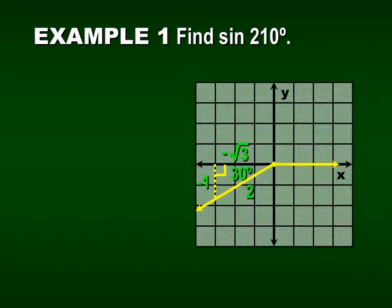The only difference in this problem is that the square root of 3 and the 1 are both negative, because of what quadrant we're in. The x-value is on the left-hand side, which means it's negative, and the y-value is below, which means it's negative. Our radius — the hypotenuse — will always be positive. So sine is y over r, or opposite over hypotenuse, which gives us negative 1 over 2.